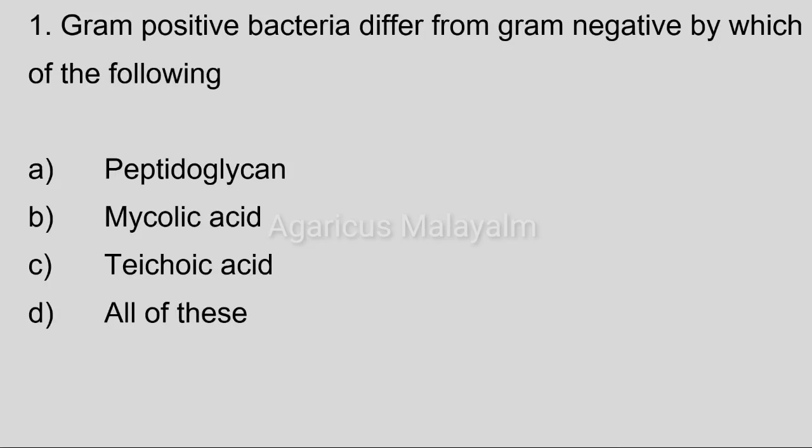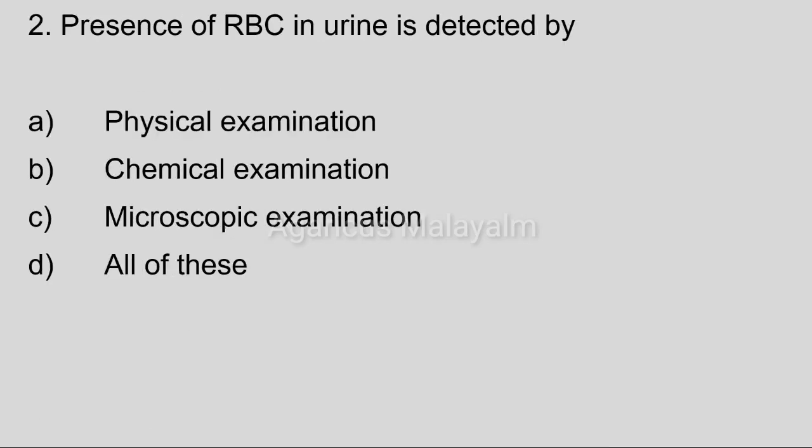Correct answer: Option C, teichoic acid. Second question: Presence of RBC in urine is detected by?